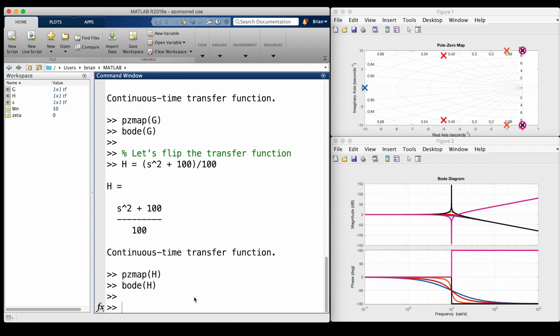But we can fix both of those problems by adding two poles to the system. Each pole will drag the high frequency magnitude down by 20 dB per decade, and it'll be flat like we want. But the question is, where should we place these two poles?